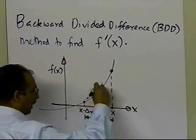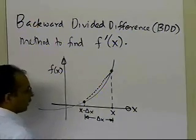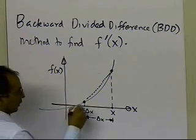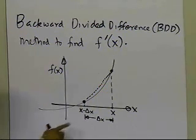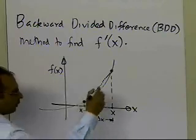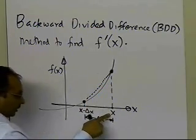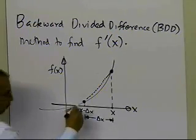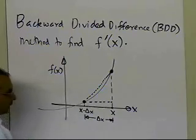I'm going to draw a secant line between the values of the function at x and x minus delta x. The coordinate of that point is x minus delta x and the value of the function at that particular point. The coordinate of this point here is x comma the value of the function at x. This is the run.